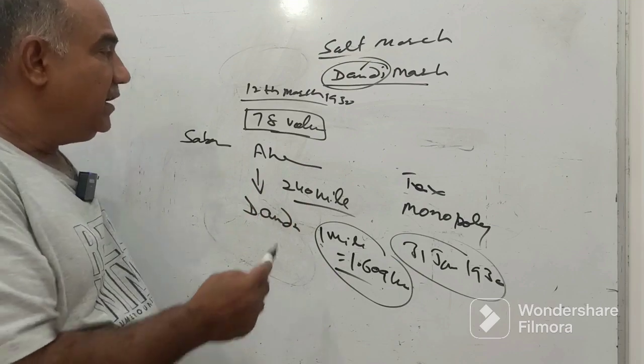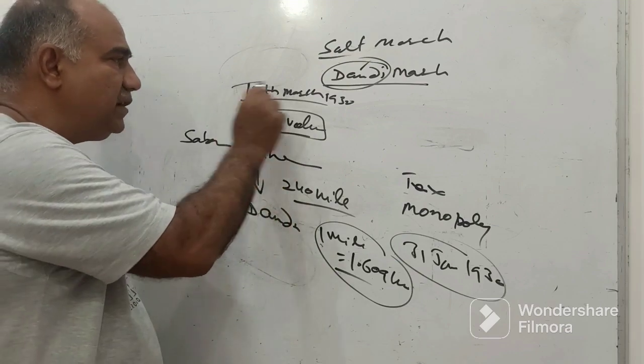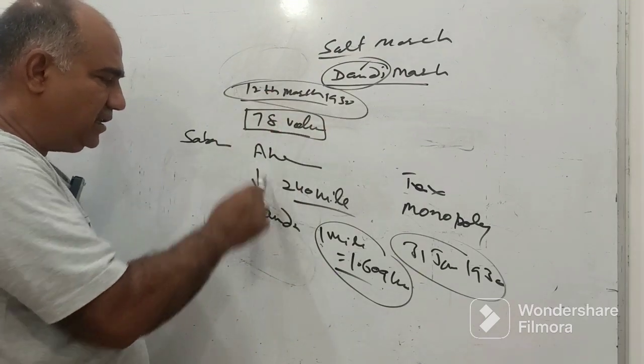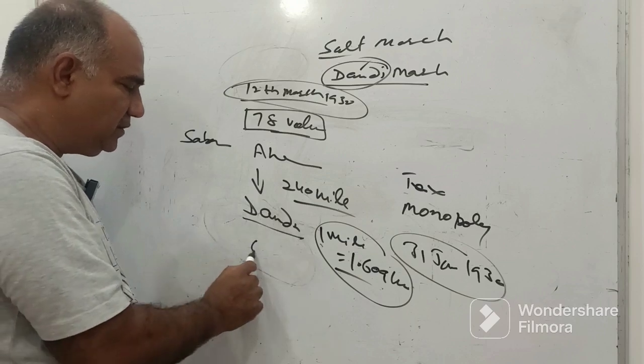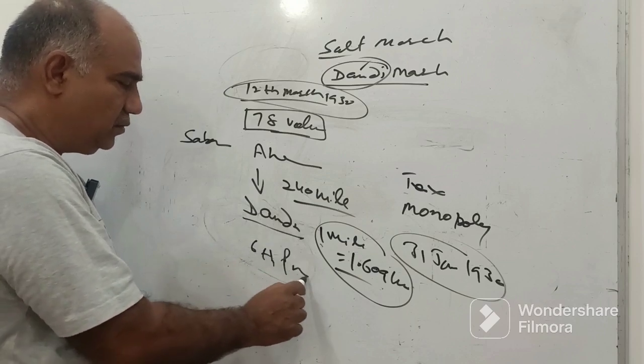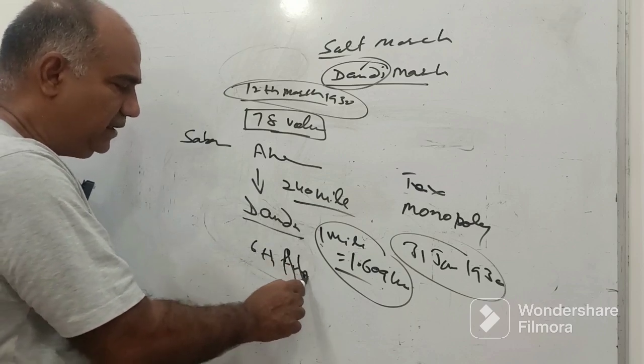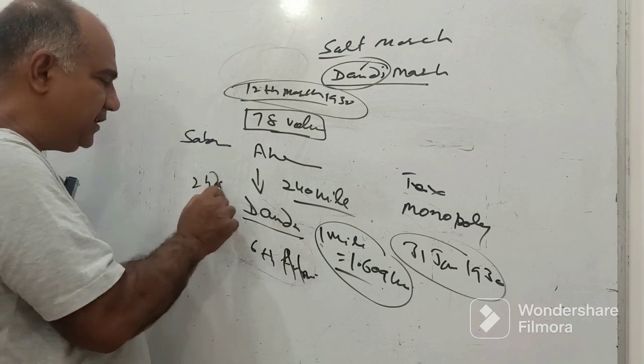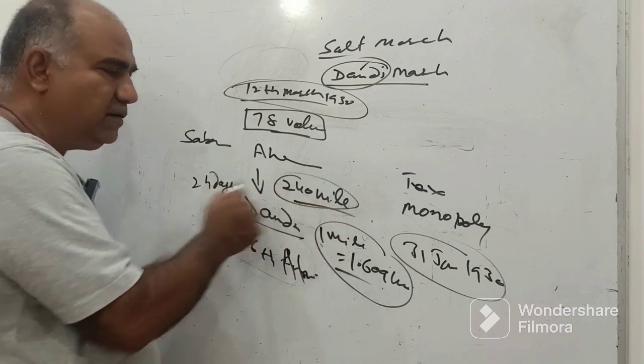This was started on 12th of March and Gandhi ji reached at Dandi on 6th of April. So altogether, 6th of April, we can say 24 days. This lasted for a distance of 240 miles covered in 24 days.